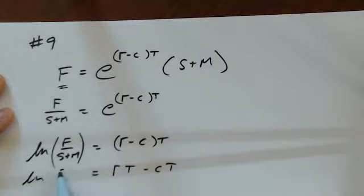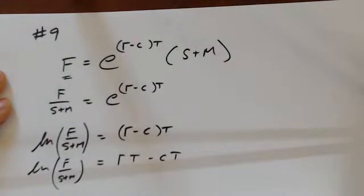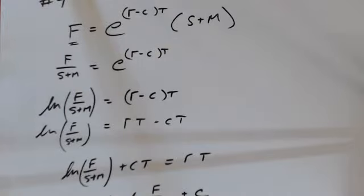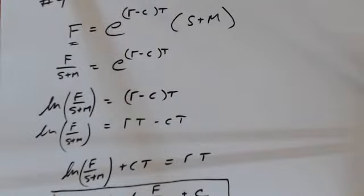R equals 1 over T log of F over S plus M plus C is what it boils down to. So this is the formula that you could put on your formula sheet. So if I was to ask you on the test, what's the implied repo rate? You'd have this formula and you'd be plugging in these letters, plugging in the numbers for the letters.